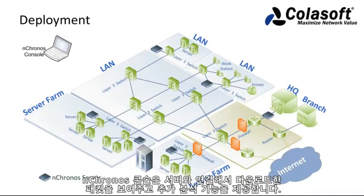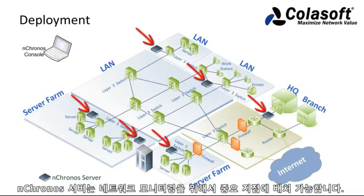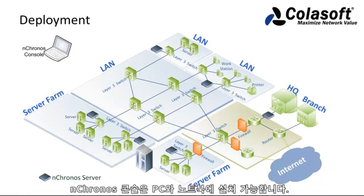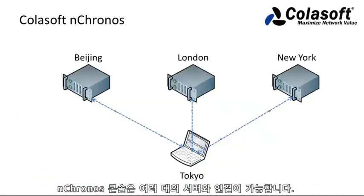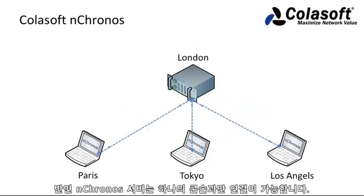Nchronos Server can be deployed at critical links to monitor the network, and Nchronos Console can be installed on any PCs or laptops at any place. Nchronos Console can connect to multiple Nchronos Servers, while one Nchronos Server can be accessed by several Nchronos Consoles.